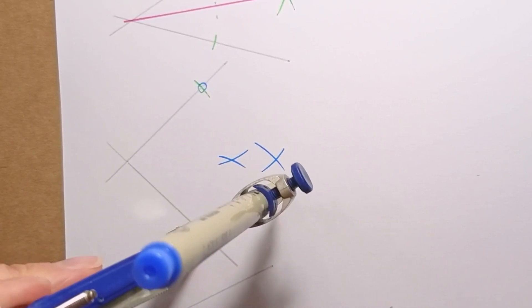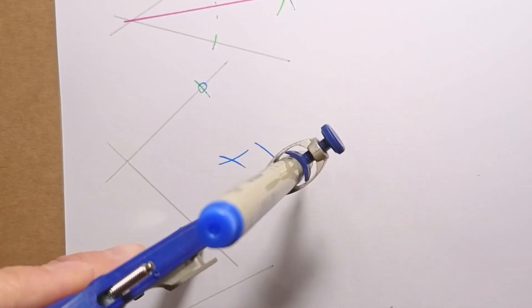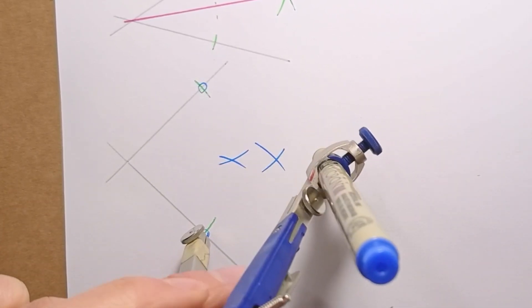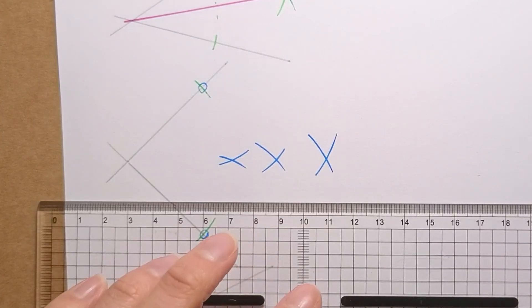And you can also go bigger. If you go bigger, the only thing you risk is the intersection falling outside of your drawing. But you can go quite far away, and you would still get an intersection on the same line.